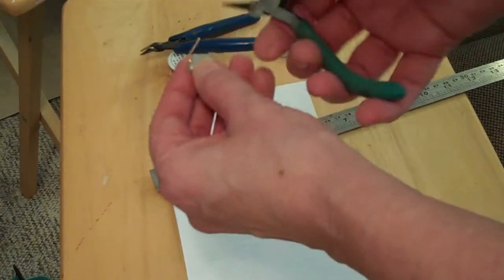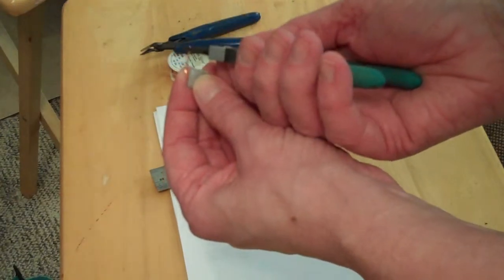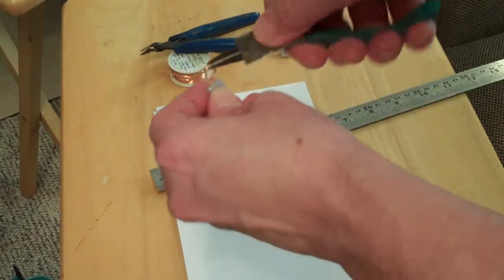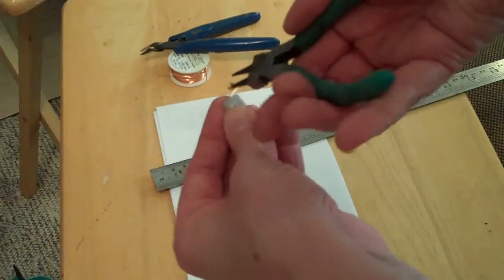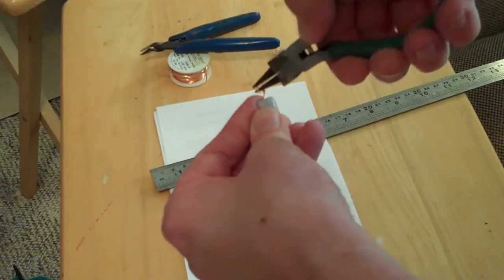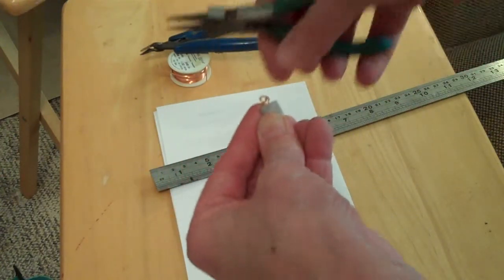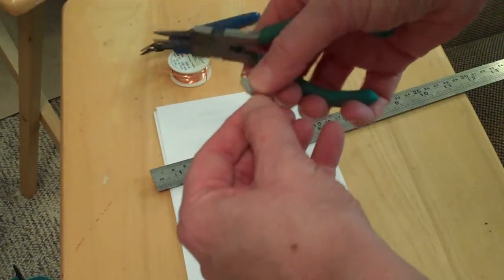And then on this end you do the same thing. Grab it at the end. Turn it around. Make a little circle. And then you're going to go to where you have a corkscrew going the opposite direction.